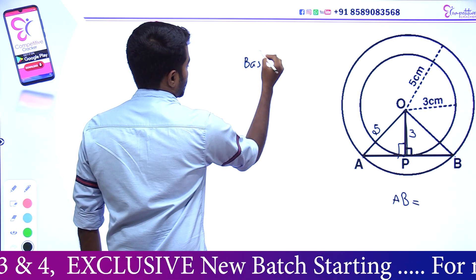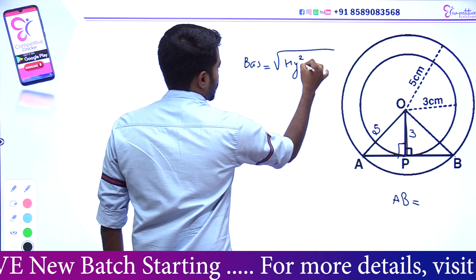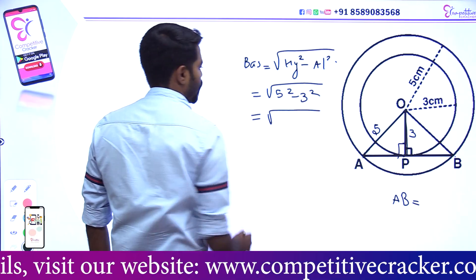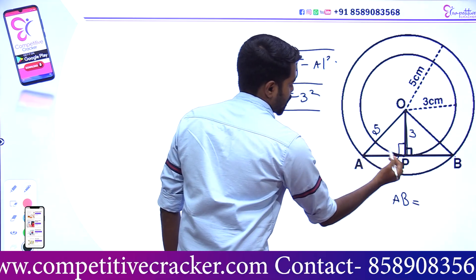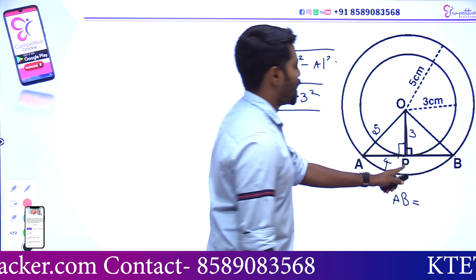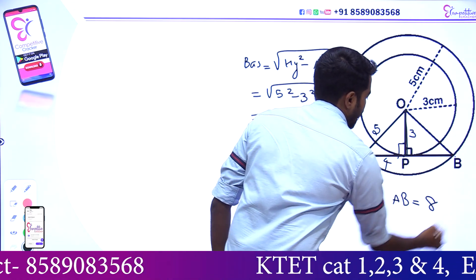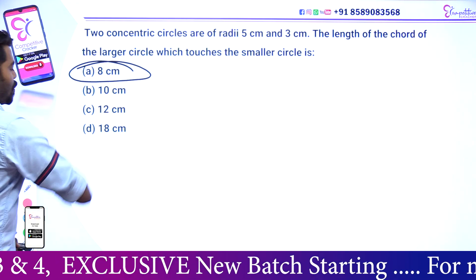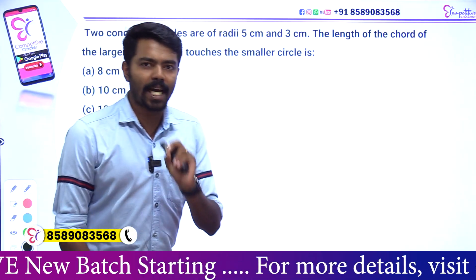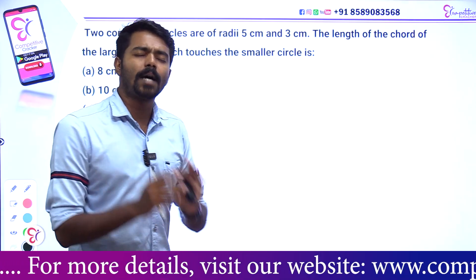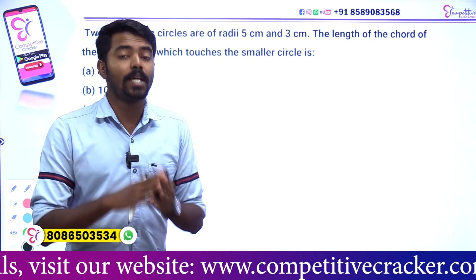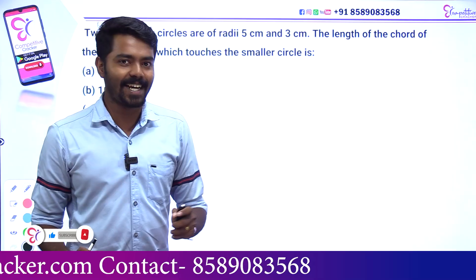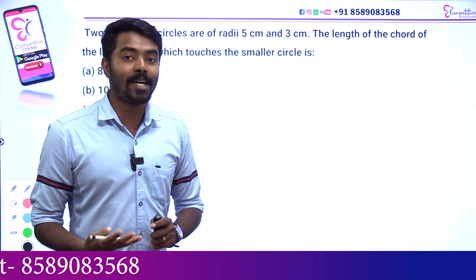Base equals root of hypotenuse square minus altitude square — that's equal to root of 5 squared minus 3 squared, which equals root of 25 minus 9 equals root of 16 equals 4. If we add AP, the answer will complete AB. There will be 8cm. Our answer is 8cm — the answer is clear. If you learn the results in this way, you should practice it. Make sure you have a score in the circle. I guarantee you. Thank you.